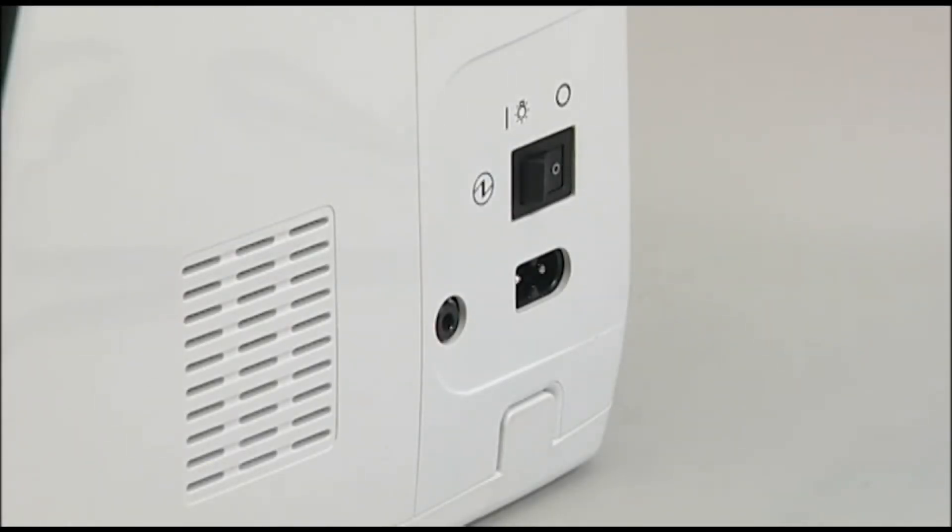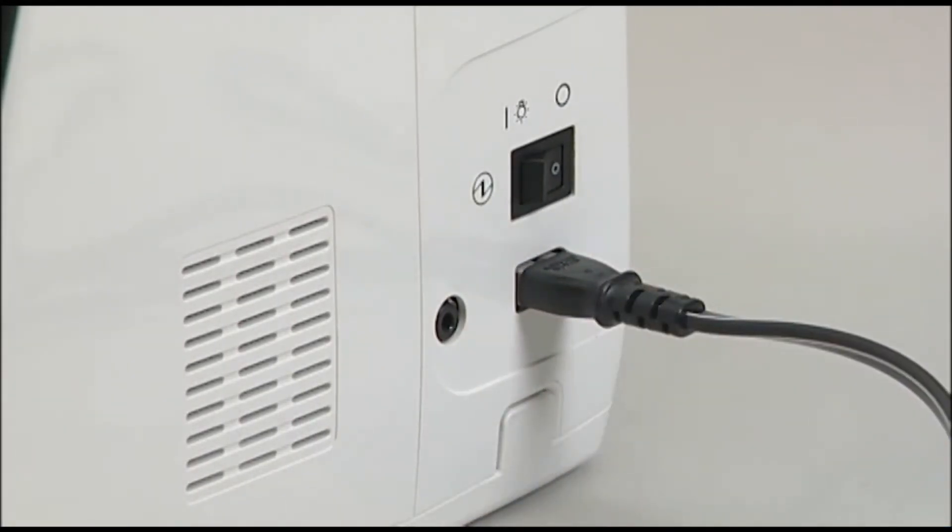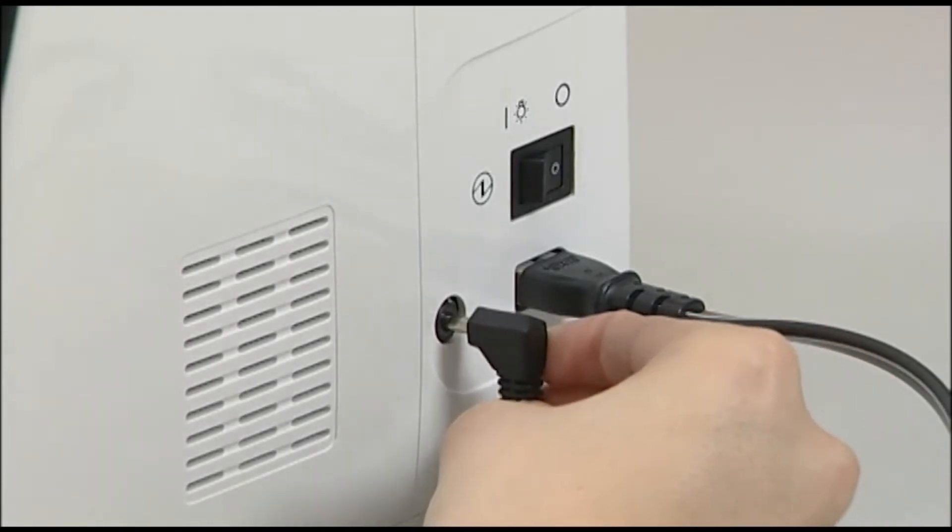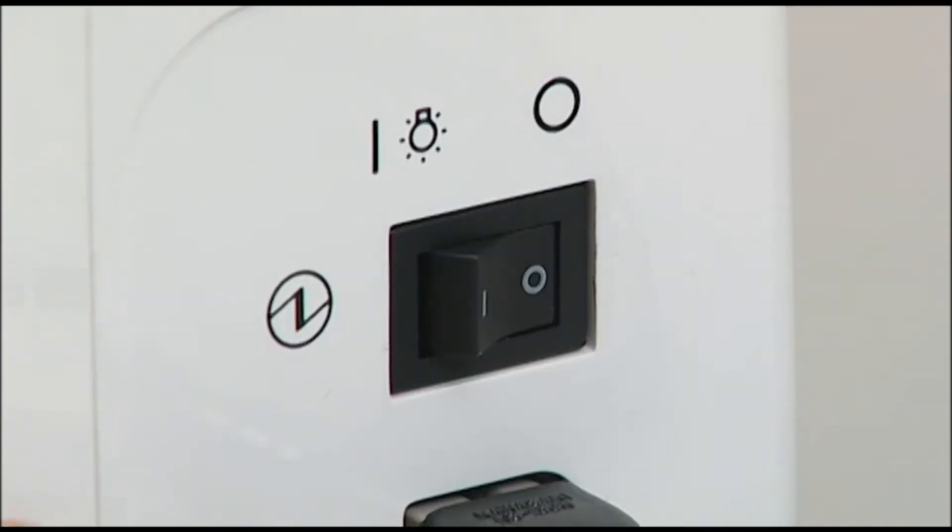Insert cord connector into machine socket inlet. If you like to use the foot controller, insert the foot controller plug into the jack. Turn on the power switch. Set the power switch to the eye mark.